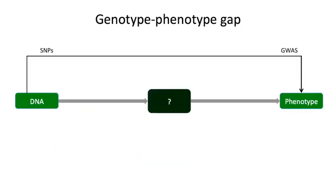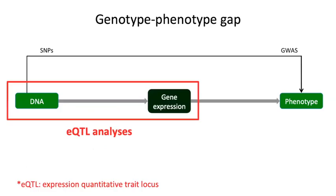The problem is that with GWAS we are only searching for a statistical association between the DNA, typically represented by SNPs, and the phenotype. We don't know anything about the biological mechanism behind this statistical association. One way to interpret this statistical association is to interrogate an intermediate phenotype, such as gene expression, and to do that we can apply a QTL analysis.